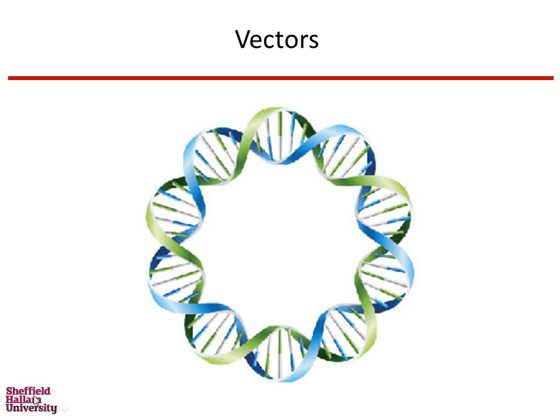This video will give you an introduction to plasmid vectors, the main features of them, and how we can use them to express proteins in cells. Plasmid vectors are typically autonomously replicating, which means they will copy themselves once inside a cell. They have traits such as their ability to be selected, so they are maintained within a cell, and they often have appropriate sites for insertion of specific genes, which can then be copied or expressed.